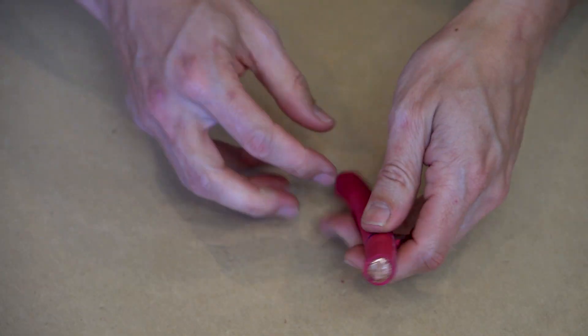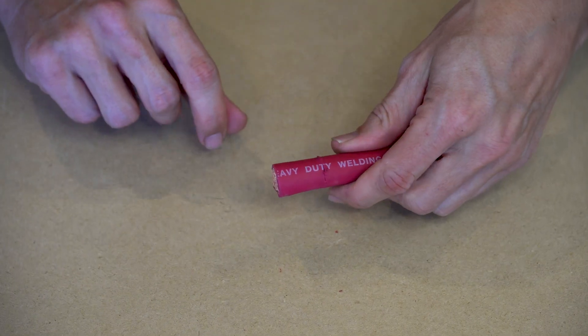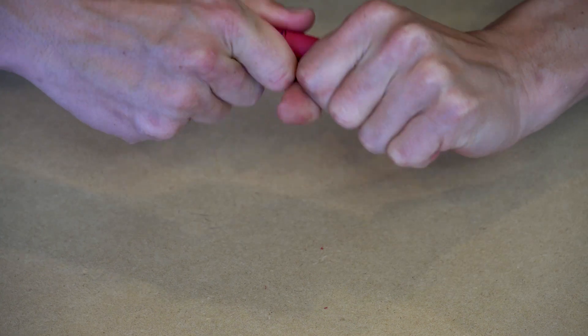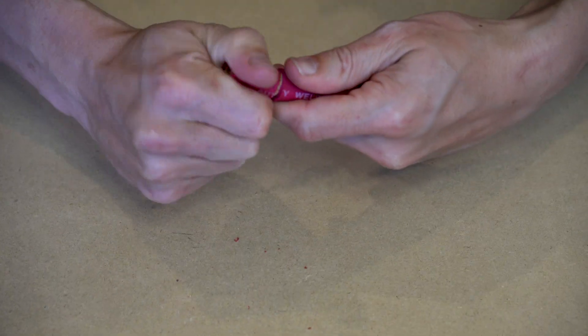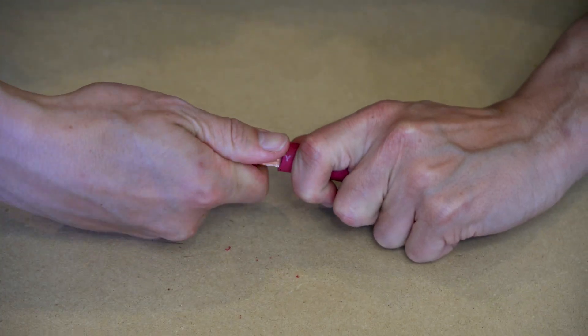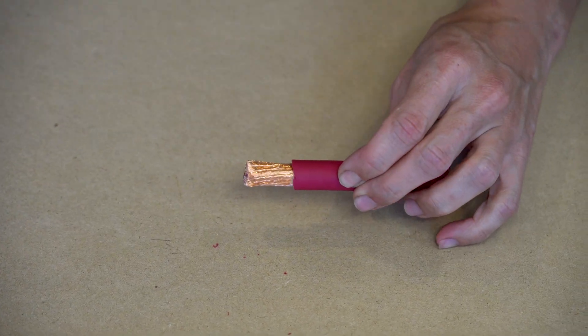When you feel like you've cut most of the jacket away, you can simply twist and pull the insulation jacket off to make the final separation. And now we're ready to crimp the lug on.